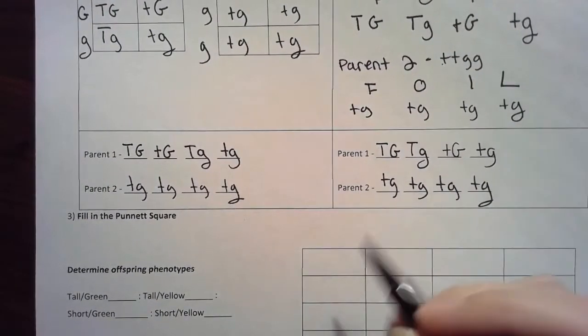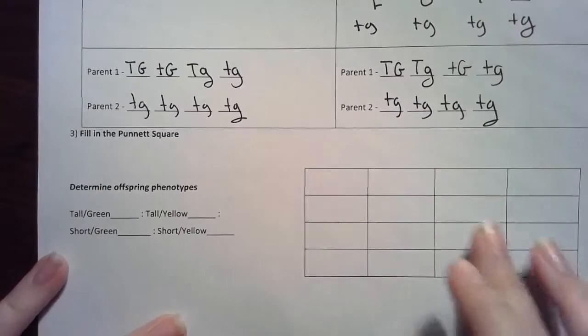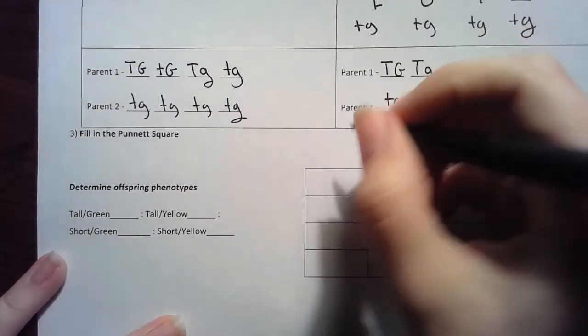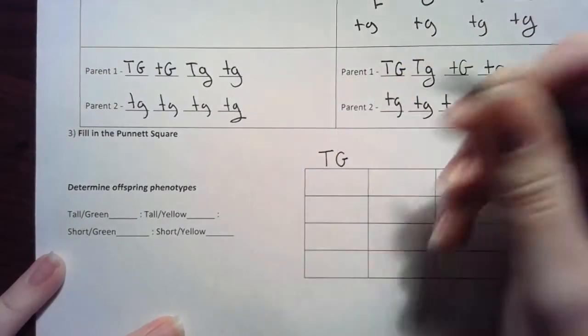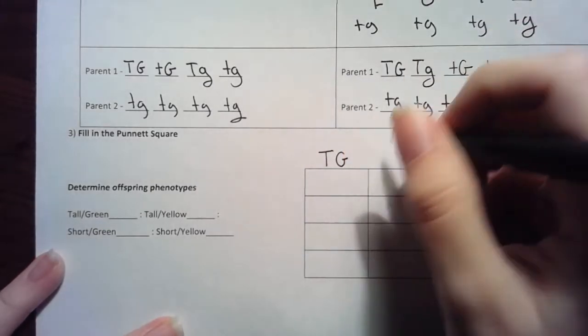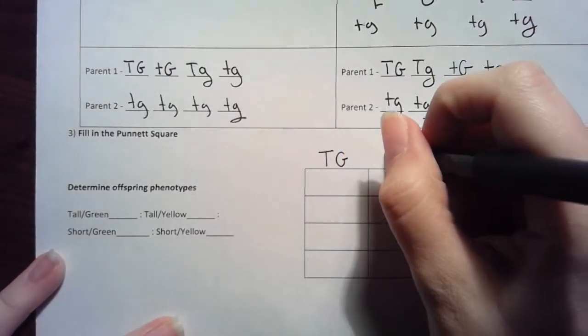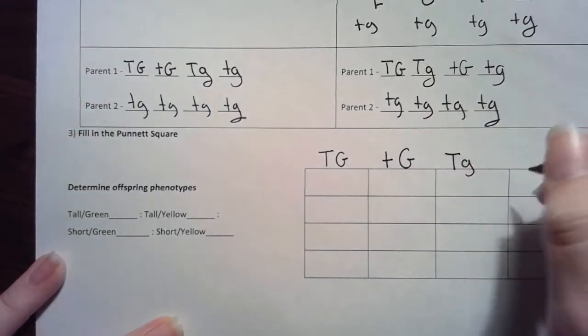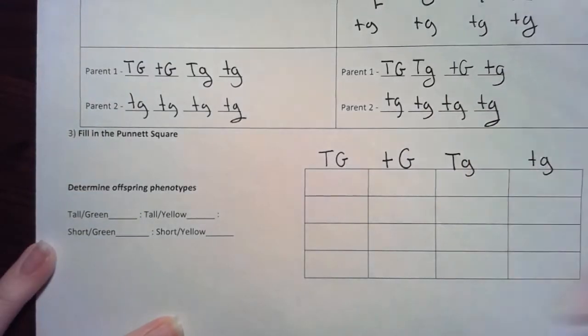Now I get to fill in my Punnett square. I'm going to put each of these gametes, notice that my Punnett square is now 16 boxes and not four. This is like mega Punnett square. I'm going to put my parent one on top, all the gametes on the top. Notice now that I have two letters above each box, not one, because now I'm dealing with two genes not just one.